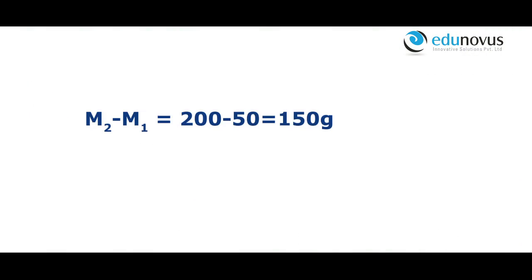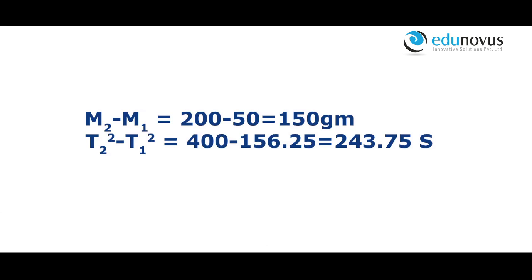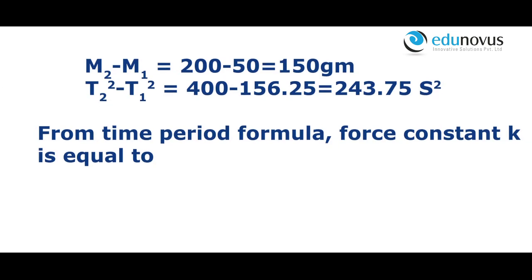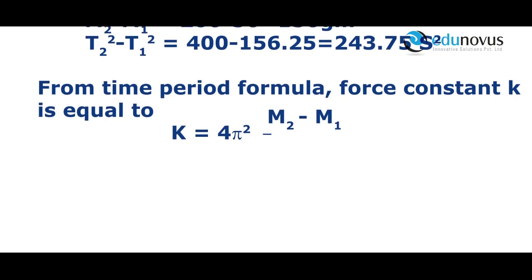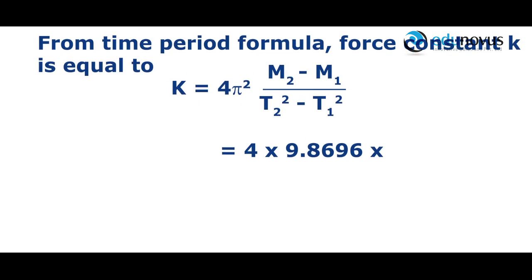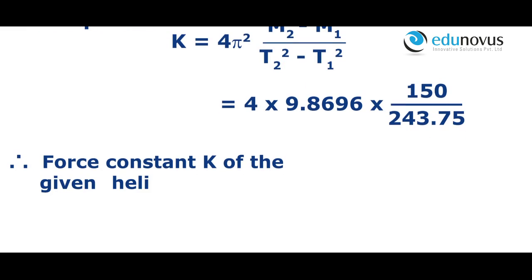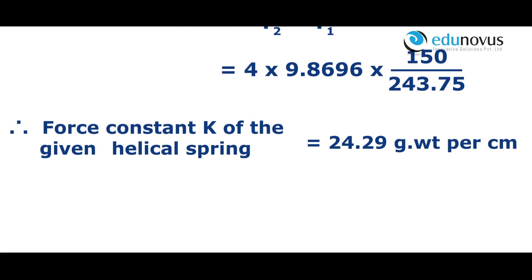From the graph, M2 minus M1 is equal to 200 minus 50, which is 150 grams. T2² minus T1² is equal to 400 minus 156.25, which is 243.75. From the time period formula, force constant k is equal to 4π² × (M2 − M1) / (T2² − T1²), which is 4 × 9.8696 × 150 / 243.75. Therefore the force constant k of the given helical spring is 24.29 gram-weight per centimeter.